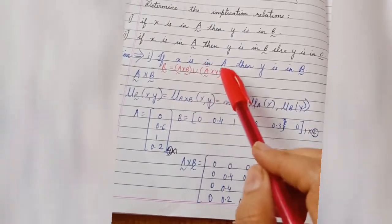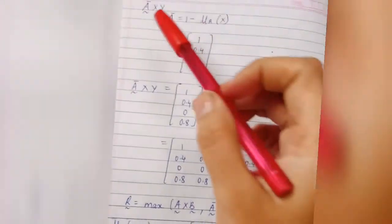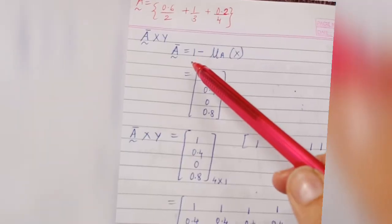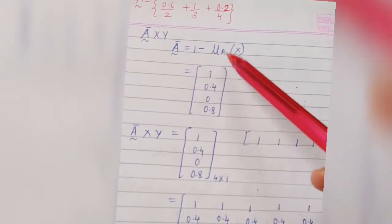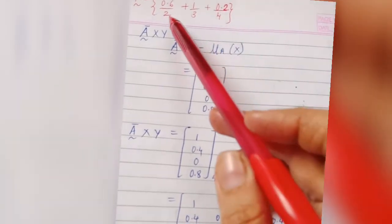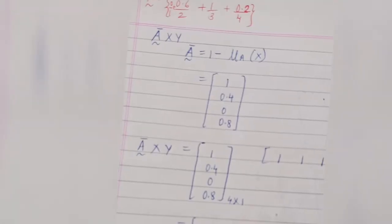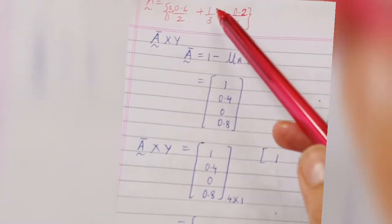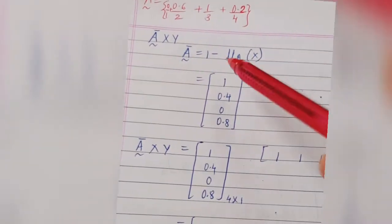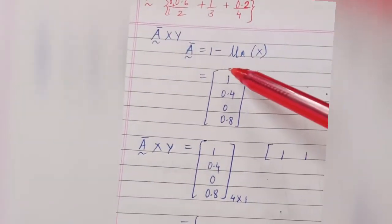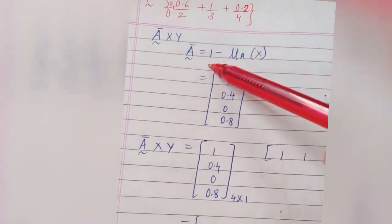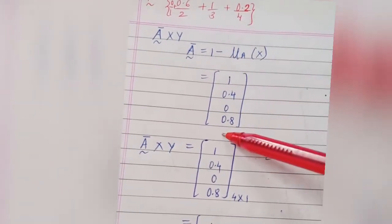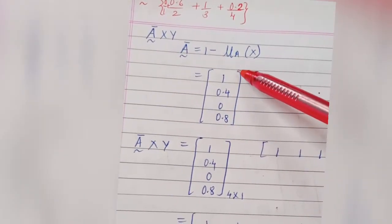Now solve the second part: A-complement Cartesian Y. First calculate A complement using 1 minus mu_A(x). Set A elements are 0/1, 0.6/2, 1/3, 0.2/4. So A complement: 1−0=1, 1−0.6=0.4, 1−1=0, 1−0.2=0.8. A complement column vector is [1, 0.4, 0, 0.8].